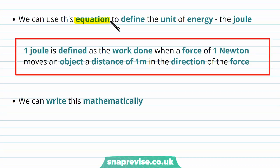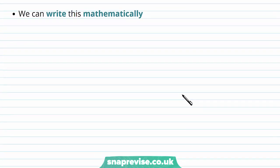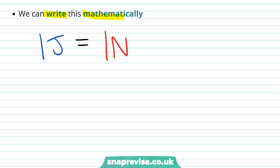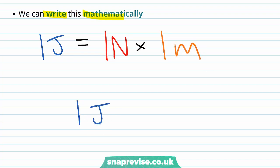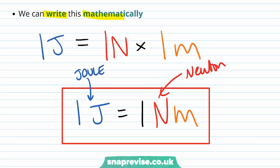We can use this equation to define the unit of energy, which is the joule. One joule is defined as the work done when a force of one newton moves an object a distance of one meter in the direction of the force. So mathematically, one joule equals one newton times one meter, meaning one joule equals one newton meter.